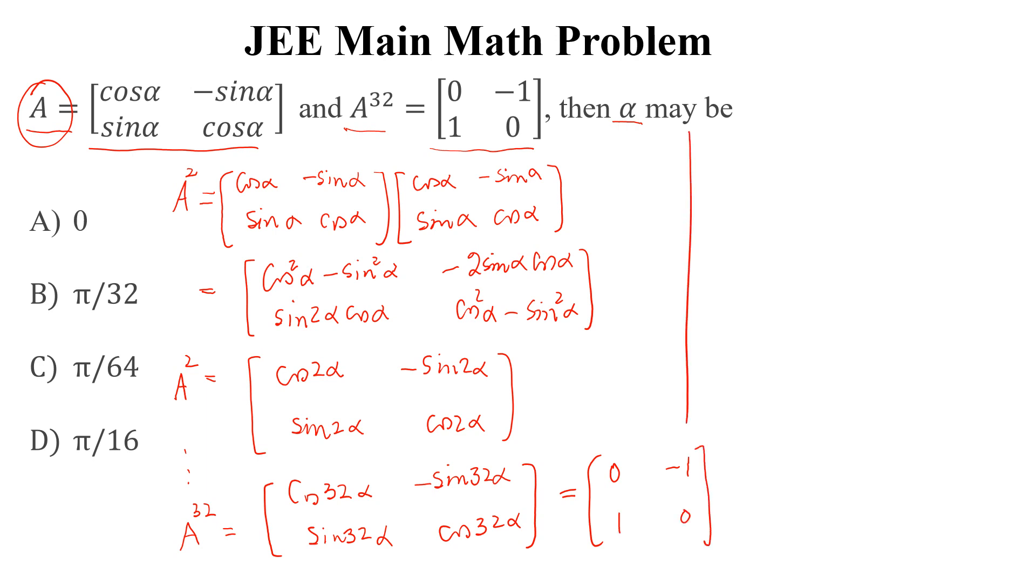So from here, we can write that cos32α equals zero. Therefore, 32α equals cos inverse of zero, and cos inverse of zero equals π/2. So α equals π/64, and this is the correct option.